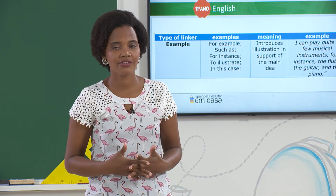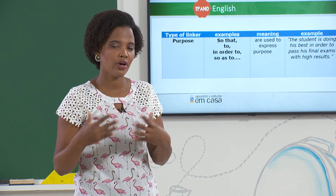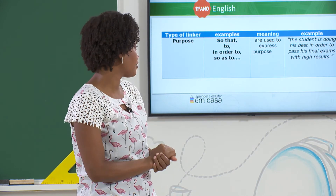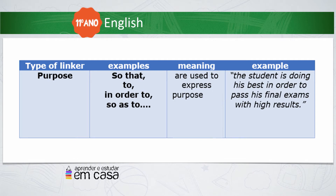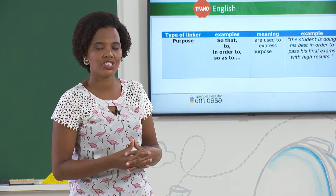So far, so good? There are some more. Now, if we want to show purpose — what is our intention when doing something — of course we use the linkers of purpose. We have: so that, to, in order to, so as to. They are used to express purpose. For example: 'The student is doing his best in order to pass his final exams with high results.' This shows what his intention is when studying hard.